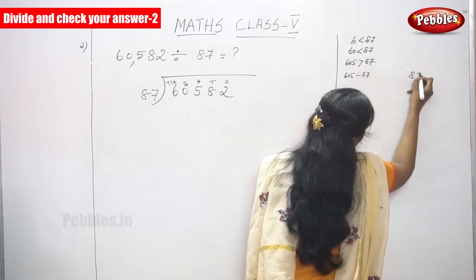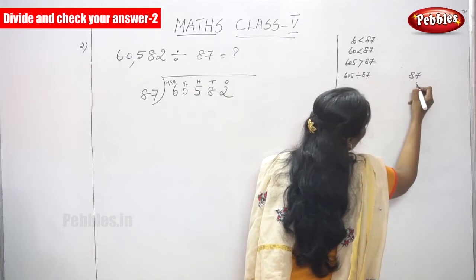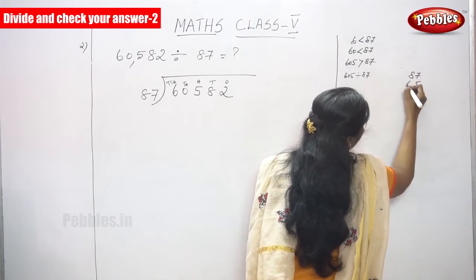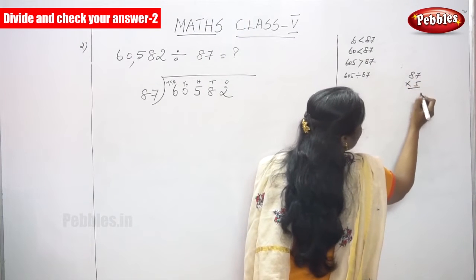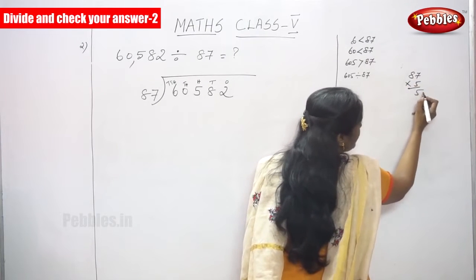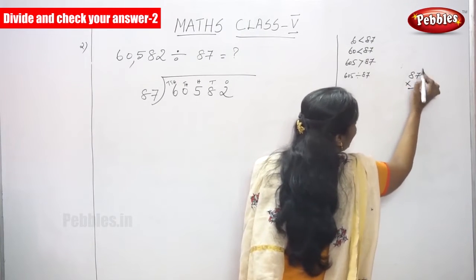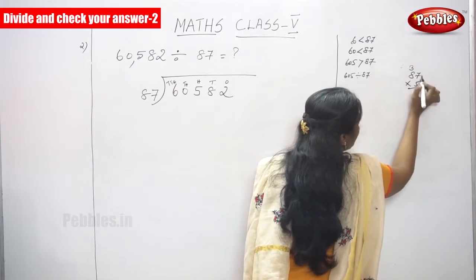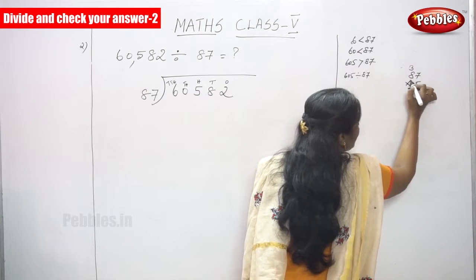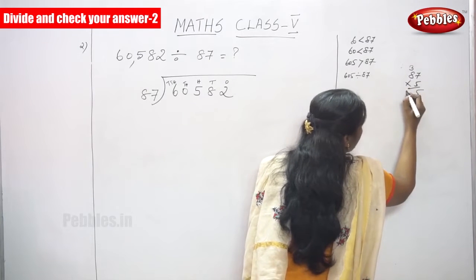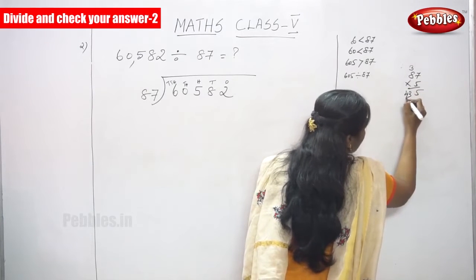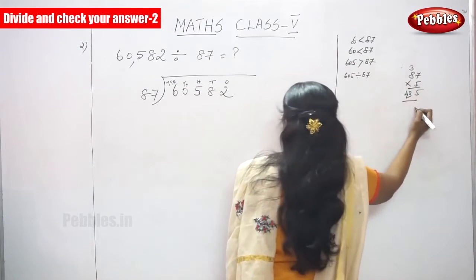Multiply. 87 into 5 times: 7 fives are 35, carry over is 3. 5 eights are 40, 40 plus 3 is 43.